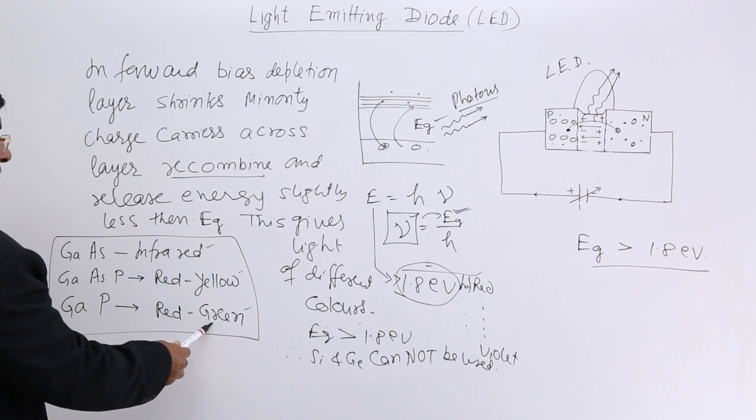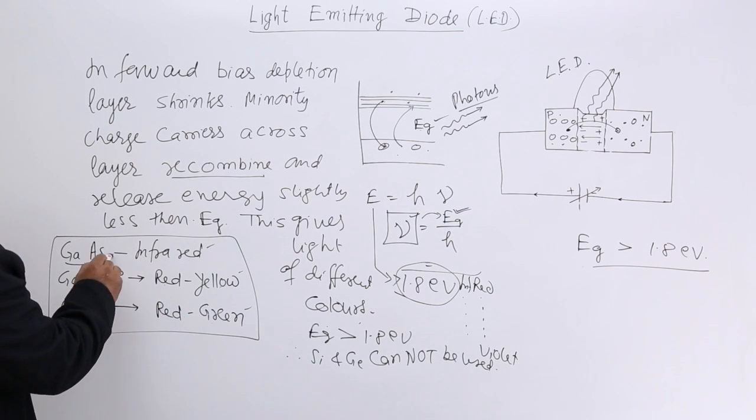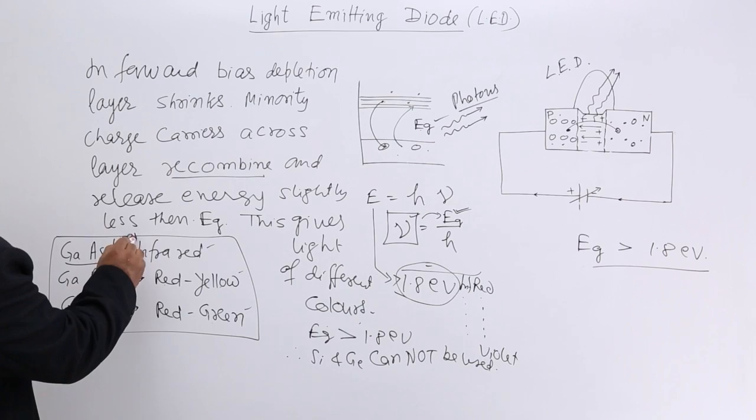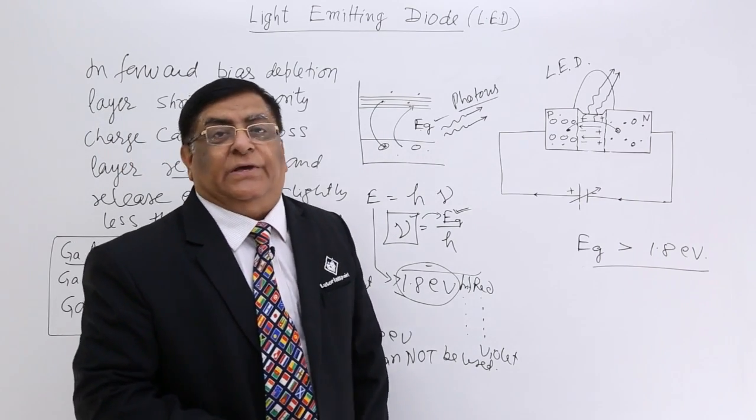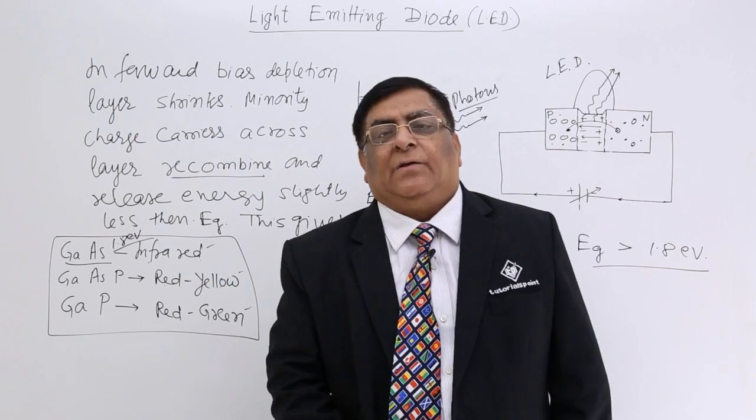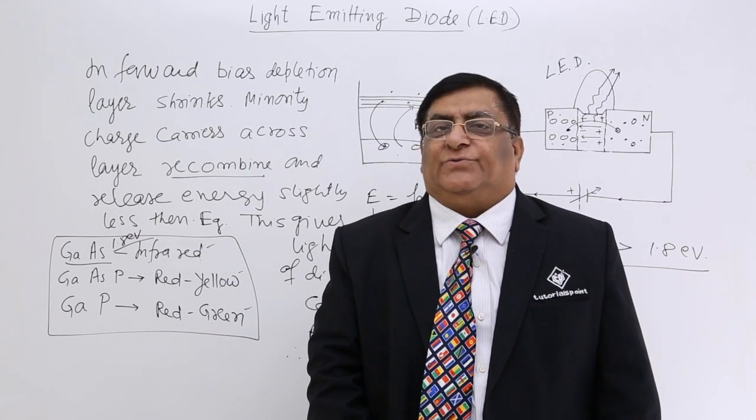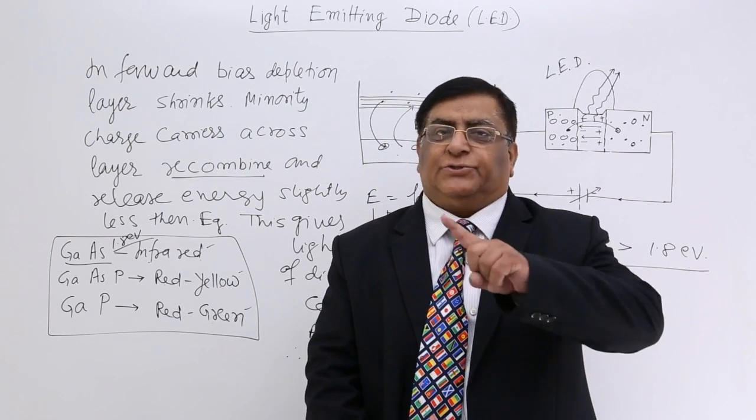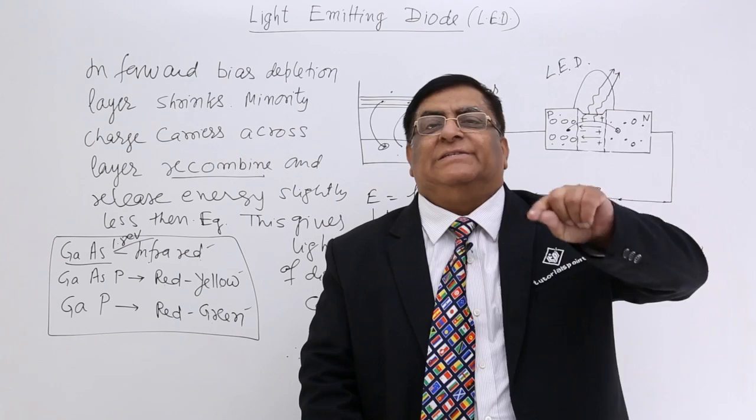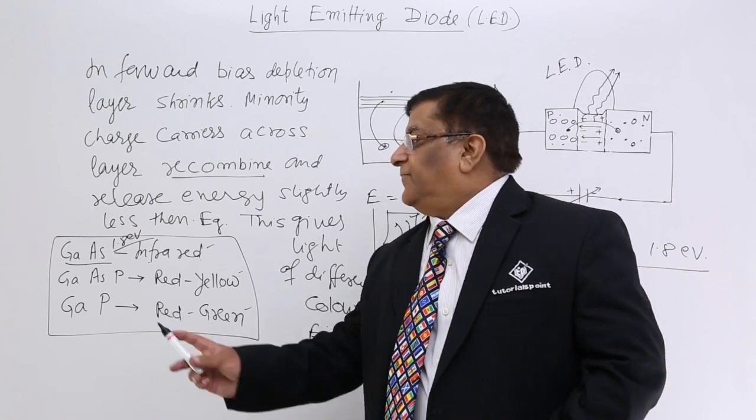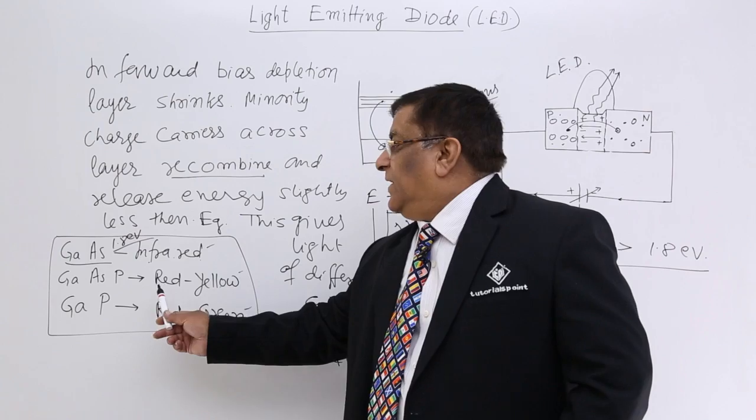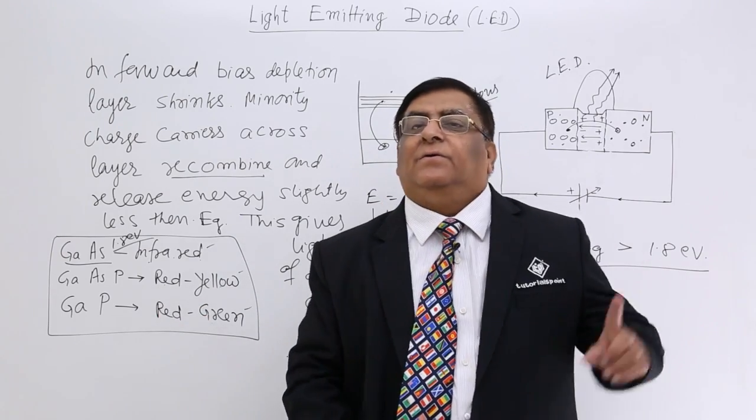So yellow, green, red. And for this gallium arsenide which is 1.8 electron volt, this gives infrared. And this we are using for remote. Because in remote we do not want to see the light, but we want there should be a light which is sensed by photodiode. So this is used for remote controls and these are used for LEDs.